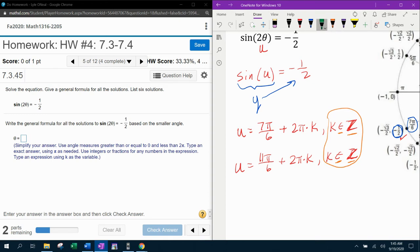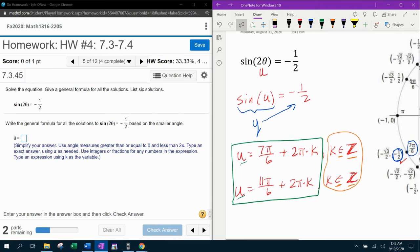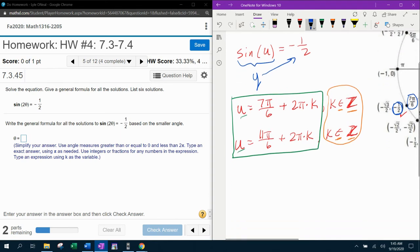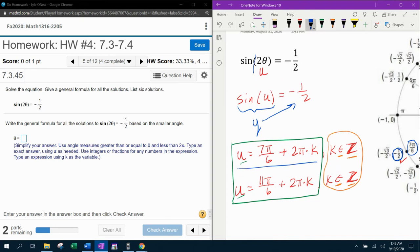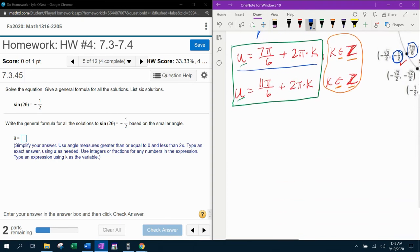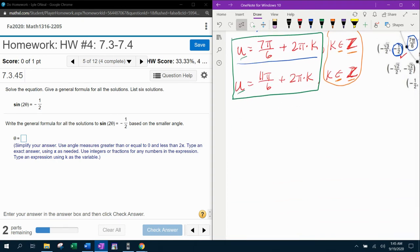So at this point, we do have our two general formulas. But notice that those are in terms of u. What we need is we need the general formulas in terms of theta. So we're not done yet. I think I boxed that prematurely. We now need to take this first general form. And remember, u was 2 theta. So instead of u, we're going to say 2 theta. Let me rewrite that nicer.